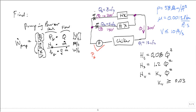M-dot through the pump is easily found: it's Q1 times the density — rho times Q1 — where Q1 is 13 cubic feet per second. So that part is solved. Now, what about the head gain the pump needs to provide?